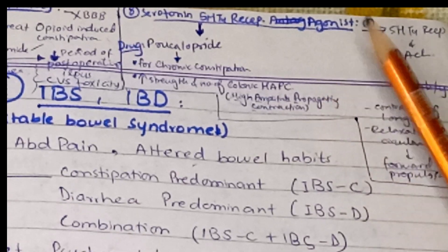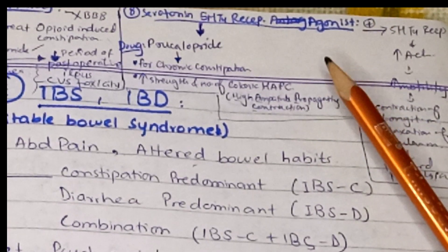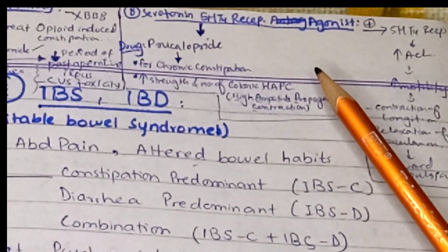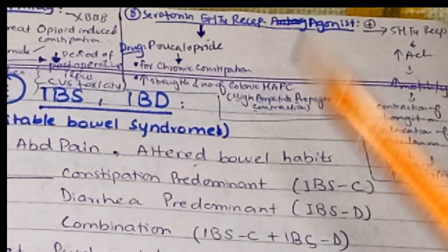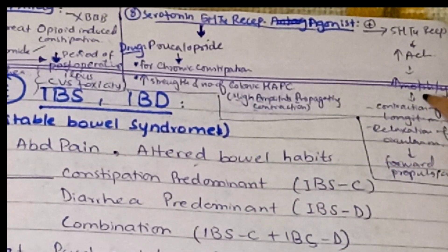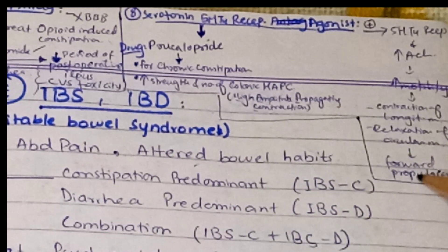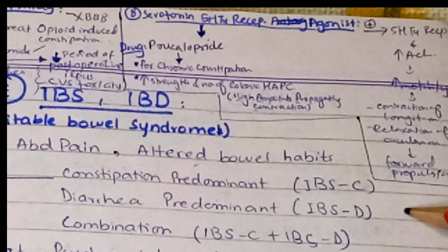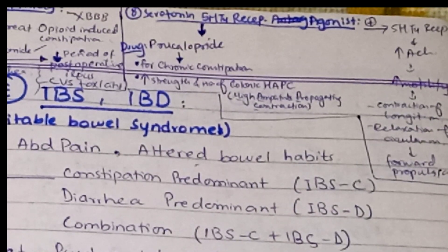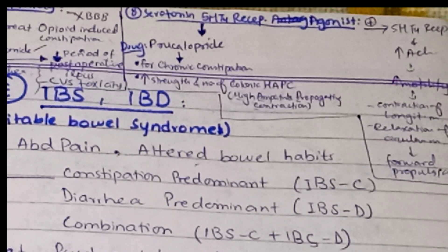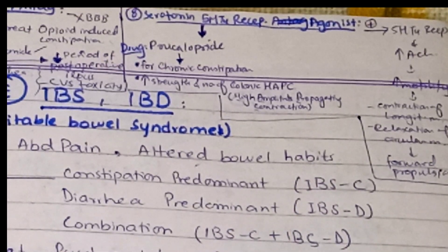The last category is serotonin receptor agonists. These stimulate serotonin receptors, which increases acetylcholine and ultimately increases motility. Contractions of the longitudinal muscles increase and circular muscles relax, leading to forward propulsion. The drug in this category is prucalopride, used for chronic constipation to increase the strength and number of colonic high-amplitude propagating contractions.